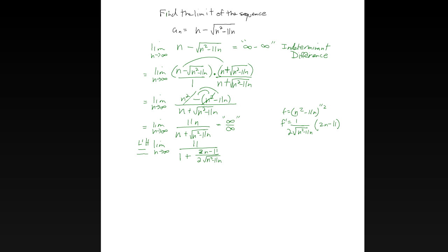Alright, where does that get you? What happens as n gets big — we have 11 for the numerator. In the denominator, as n gets big it's essentially going to go to 1. Let's focus on that: the limit as n goes to infinity of 2n minus 11 over 2 square roots of n squared minus 11n.